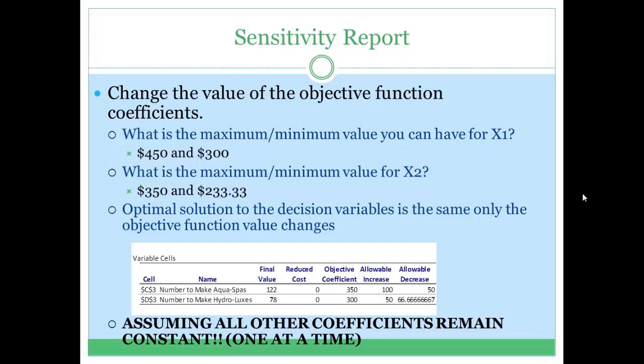Let's first talk about the variable cells table. What kind of information can we get from this table? The first column is the final value.